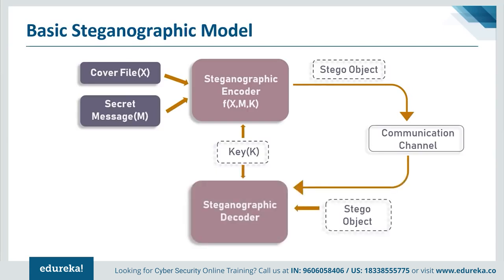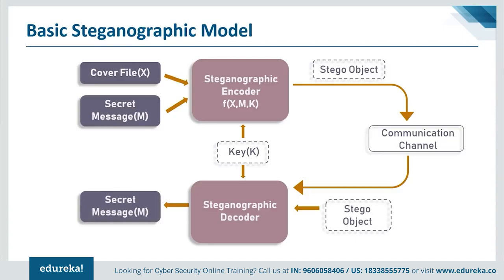This stego object is sent to the receiver through the network without any encryption. On the other end, if the receiver wants to extract the secret message, all they have to do is feed the stego object into a steganographic decoder — which also takes the key as input — and as a result, they get the secret message intended for them. To summarize: cover file plus secret message plus optional key are fed into the steganographic encoder, producing a stego object that looks identical to the cover object, which is then sent to the receiver.